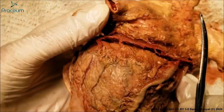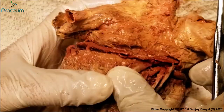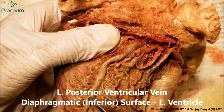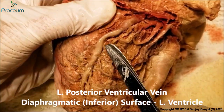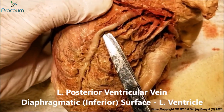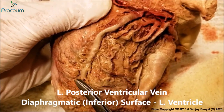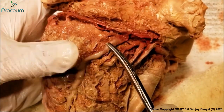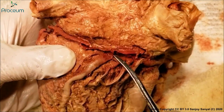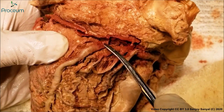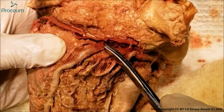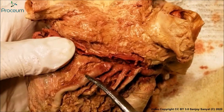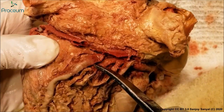Now I'm turning the heart slowly. We have come to the diaphragmatic inferior surface. This is the posterior ventricular vein, which runs on the diaphragmatic or the inferior surface of the left ventricle. And we can see it is opening into the coronary sinus. We have separated it here to show the arteries. This is the coronary sinus.